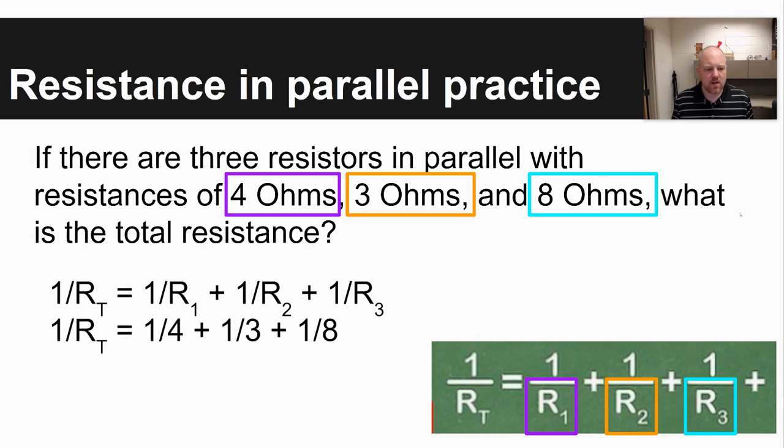It tells you in the problem. So you'd plug in those fractions, 1 fourth, 1 third, 1 eighth. I would convert those to a decimal, 0.25, 0.33, 0.125. And so you end up with 1 divided by R total is equal to 0.705.